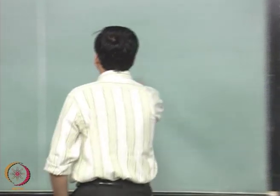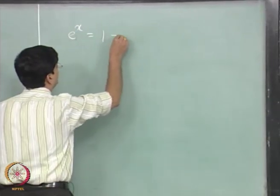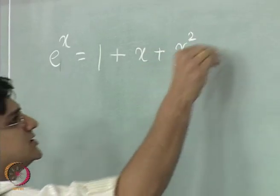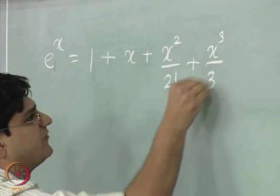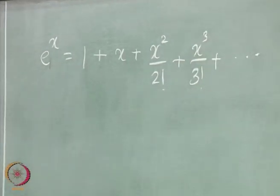As we had said before, e to the power x can be written as 1 plus x plus x square by 2 factorial plus x cube by 3 factorial and so on. This is an infinite series.